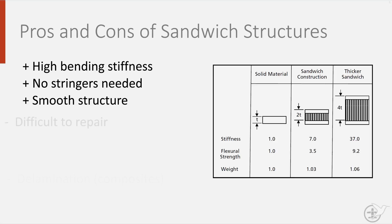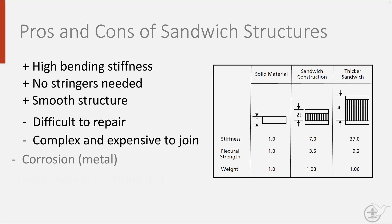The downsides are that the structures are difficult to repair. Also, joining them to other structural elements is not easy, because many traditional bonding methods, such as riveting and bolts, are not possible. They also suffer from corrosion in metal-based sandwich structures and delamination in composites. They tend to absorb moisture, which does affect their durability.